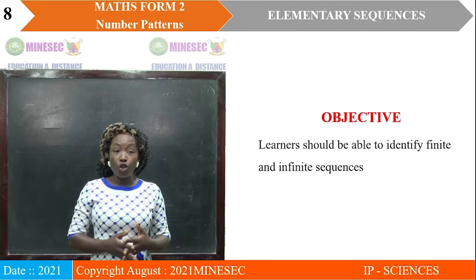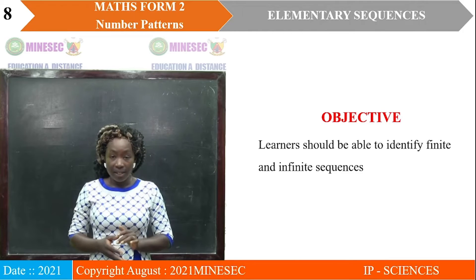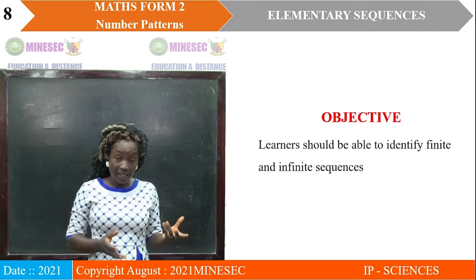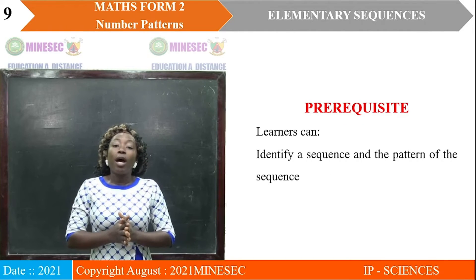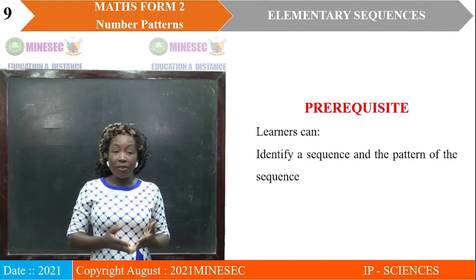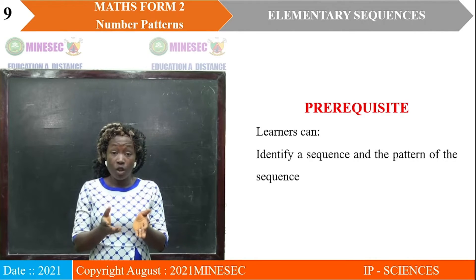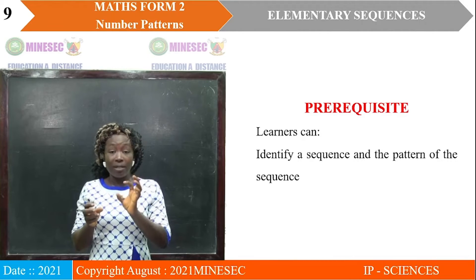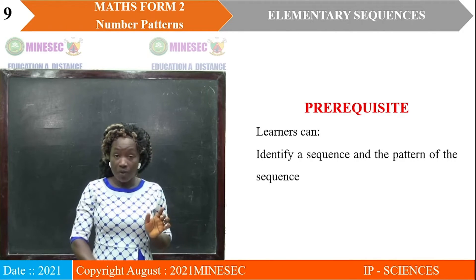At the end of this lesson, you should be able to identify a finite and an infinite sequence — when given a sequence, you should be able to see whether it is finite or infinite. What are you expected to know already? You can identify a sequence and its pattern, meaning you know how to come out with the rule and generate other members of the sequence. You already knew that from the previous lesson.